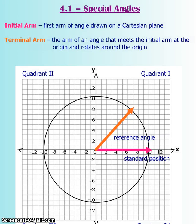Chapter 4 brings focus to trigonometry. Section 4.1 talks about special angles, but we're not going to talk about special angles yet because some background information is needed first.